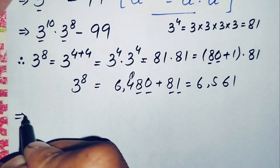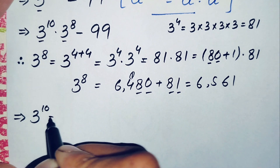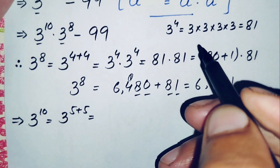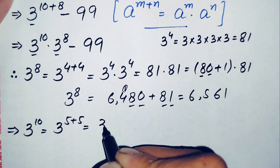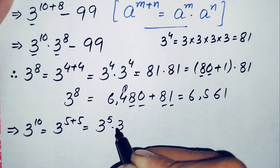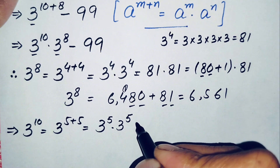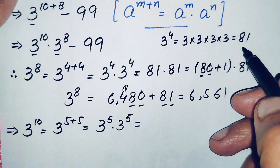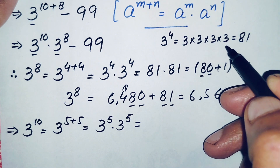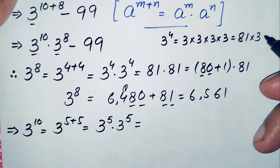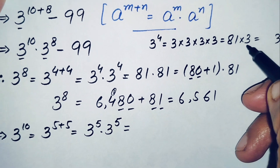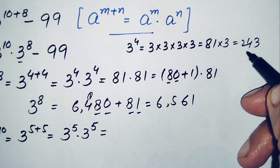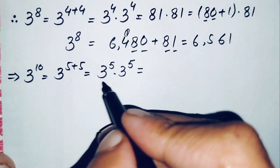Now we find 3 to the power 10. Since 10 equals 5 plus 5, we can write 3 to the power 10 as 3 to the power 5 times 3 to the power 5. We already know 3 to the power 4 is 81, so multiplying by 3: 3 times 81 — 3 times 1 is 3, 3 times 8 is 24 — gives 243. So 3 to the power 5 is 243.